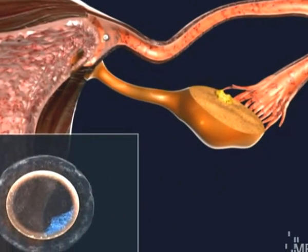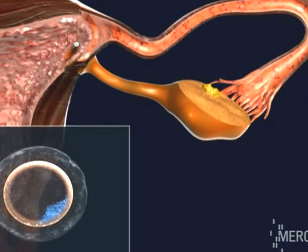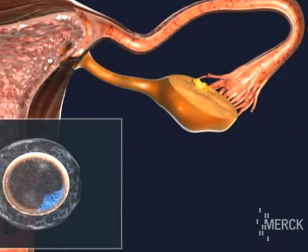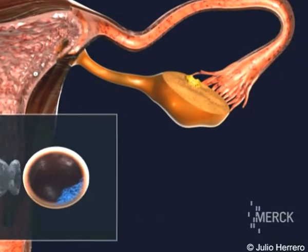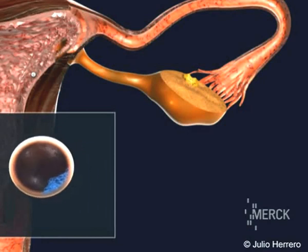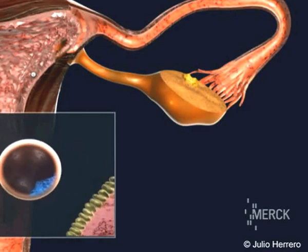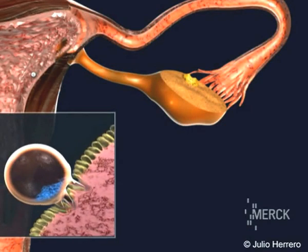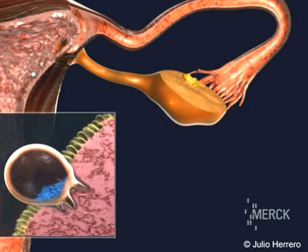The blastocyst migrates to the uterus and sheds the surrounding membrane in a process called hatching, and the embryo begins to implant in the endometrium of the uterus.